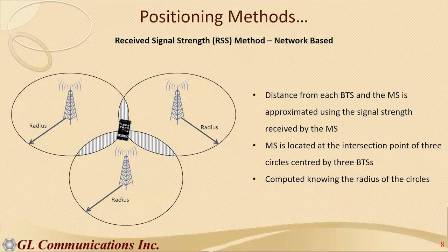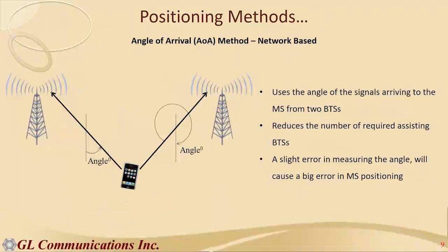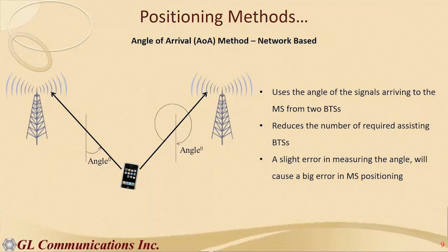The Receive Signal Strength method approximates the distance from each BTS to the mobile subscriber based on signal strength, and is able to triangulate the location of the mobile subscriber using multiple base stations.